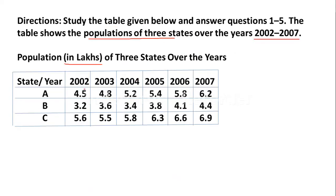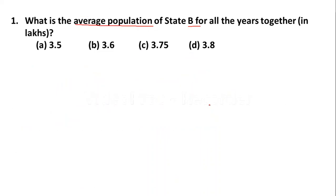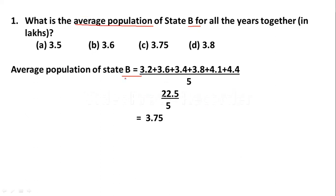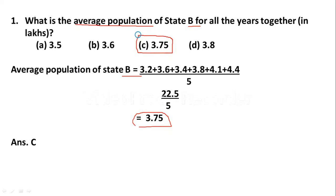State B values: 2002: 3.2 lakhs, 2003: 3.6 lakhs, 2004: 3.4 lakhs, 2005: 3.8 lakhs, 2006: 4.1 lakhs, 2007: 4.4 lakhs. Average population of State B = (3.2 + 3.6 + 3.4 + 3.8 + 4.1 + 4.4) divided by 6. That gives 22.5 divided by 6, which is 3.75. So the correct answer is option C: 3.75.